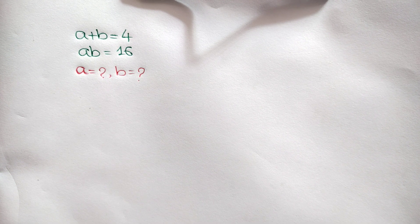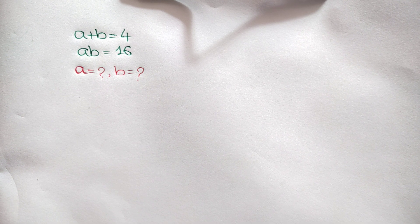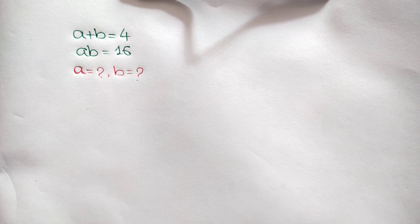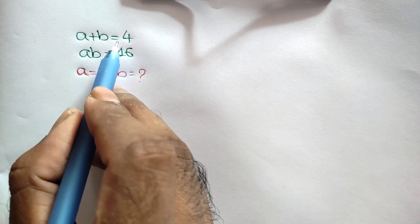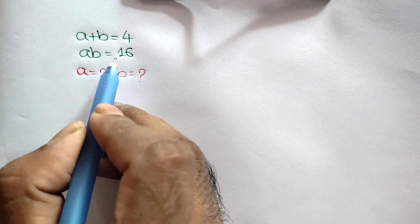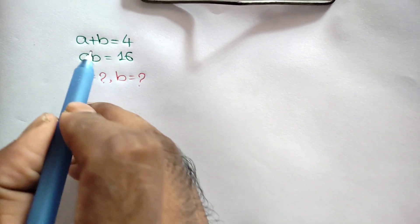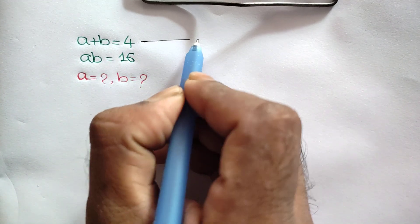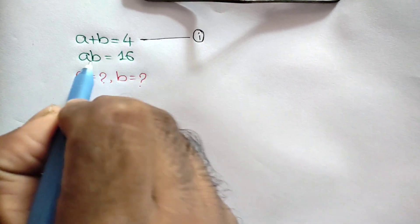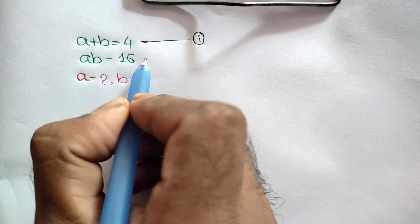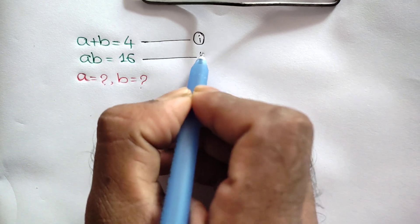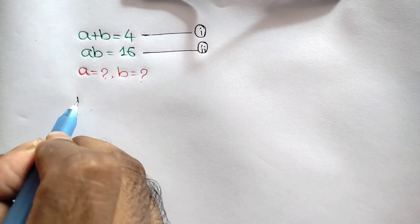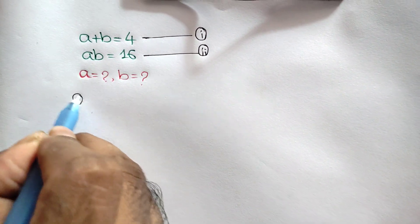Hi everyone. In this video I am going to show how to find the value of a and b, where a plus b is equal to 4 — let's call it equation number 1 — and ab is equal to 16, called equation number 2.